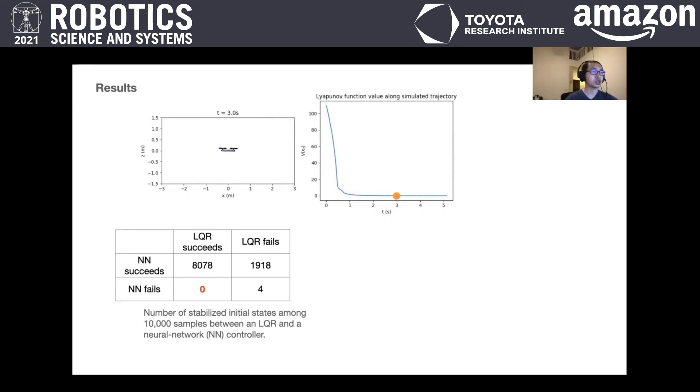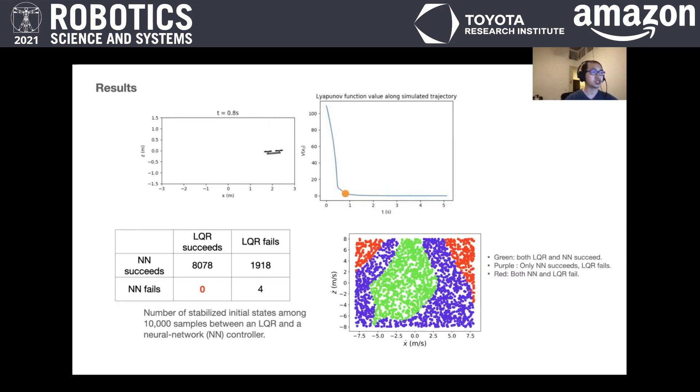Moreover, the highlighted entry with value 0 suggests that our neural network controller is strictly better than the LQR controller. We take a 2D slice of the state space with many samples. The purple region is the gap between the LQR controller region of attraction and the larger region of attraction with the neural network controller.